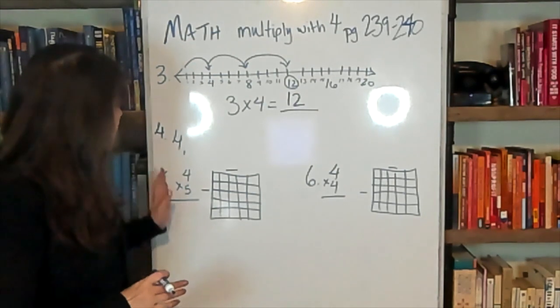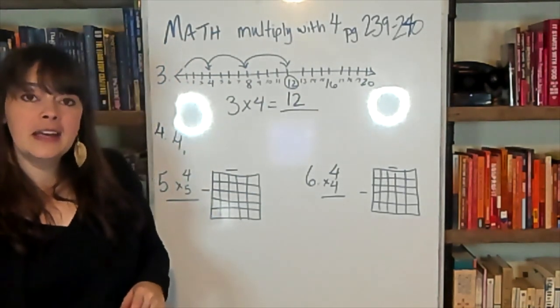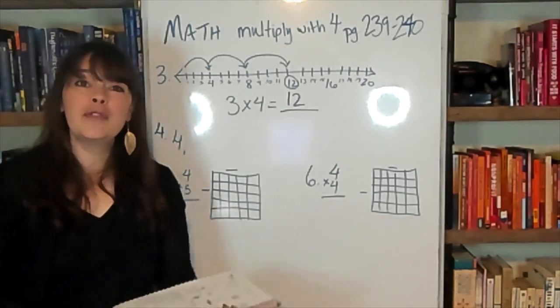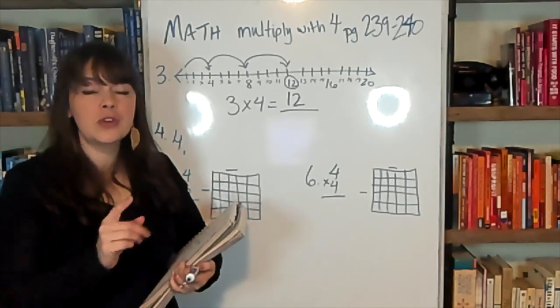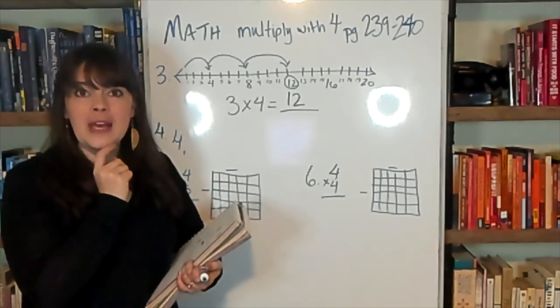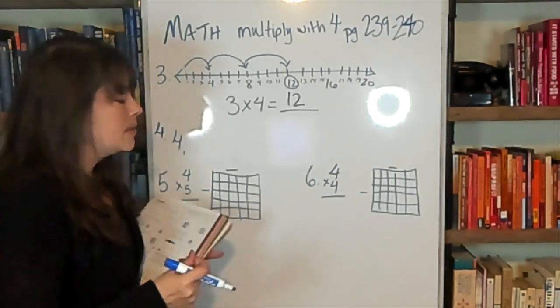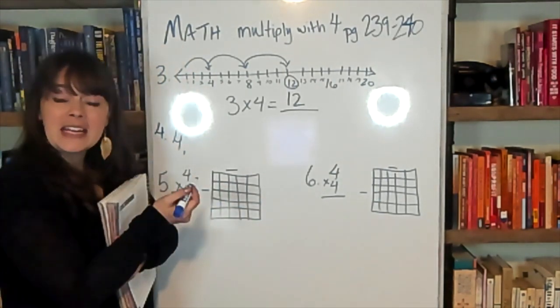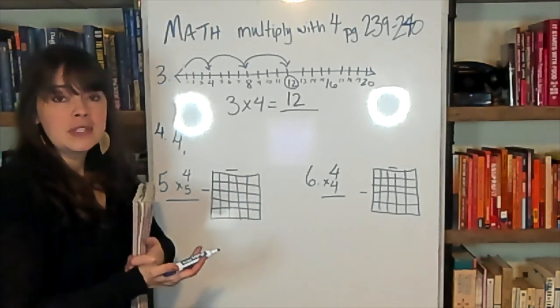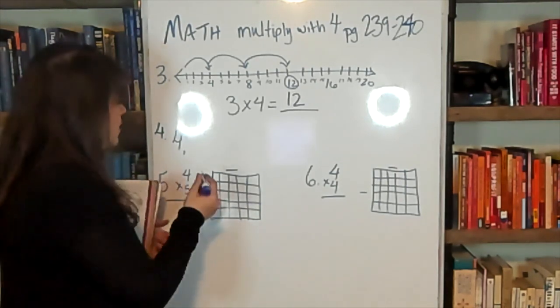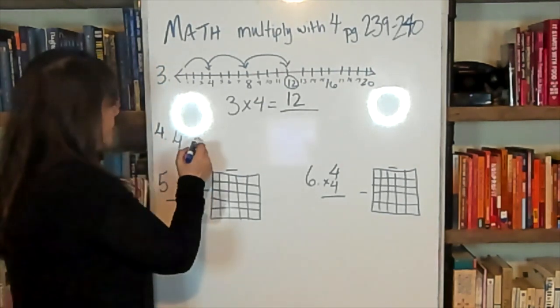Then we're going to do the skip counting. And as I've said before, the skip counting can really be helpful. Even you can refer back to it as you're solving other problems. If you're not sure if you've got the right answer, you can look back at your skip counting because it's a beginning way to become familiar with the products when you're multiplying with 4's. And like I always say, it can be easier to skip count when you know a song. So I'm going to help you fill in the skip counting with a song.